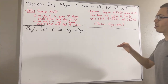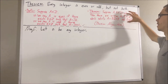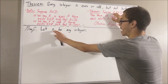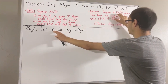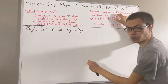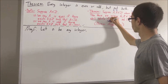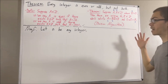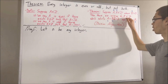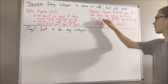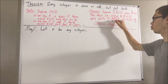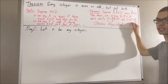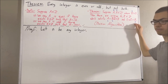Let's start out by applying the division algorithm. We'll take A to be n and B to be 2. If we do that, then there are unique integers q and r which satisfy n equals 2q plus r, and 0 is less than or equal to r is less than 2.